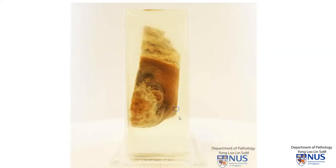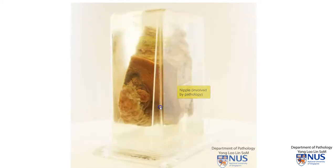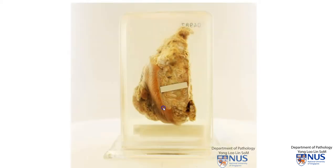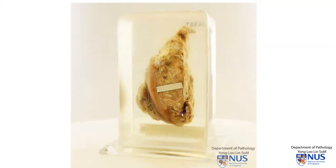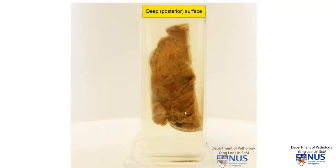Let's turn the specimen and here we can see the skin surface. There is a very abnormal area here. This is the region of the nipple. On this opposite surface, this again is the edge of the skin and here is the underlying breast parenchyma. And this is the deep surface here.